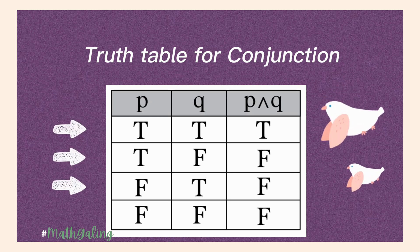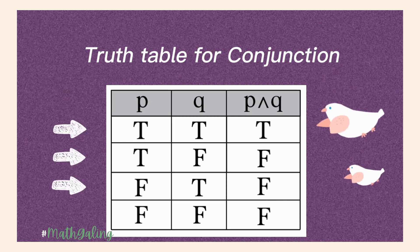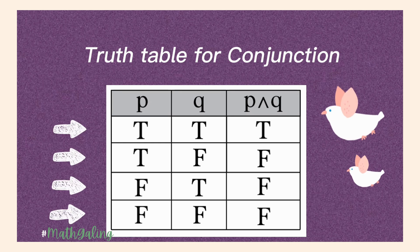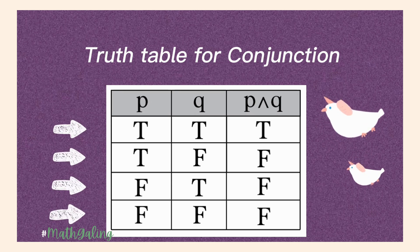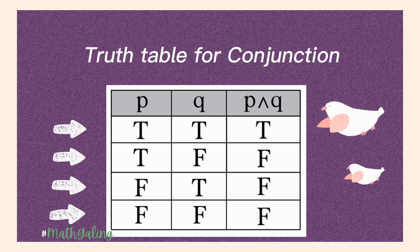Third, if the first is false and the second is true, the truth value of that is false. Fourth, if the first is false and the second is false, and they are joined by any of those logical operators, the truth value of that is still false.